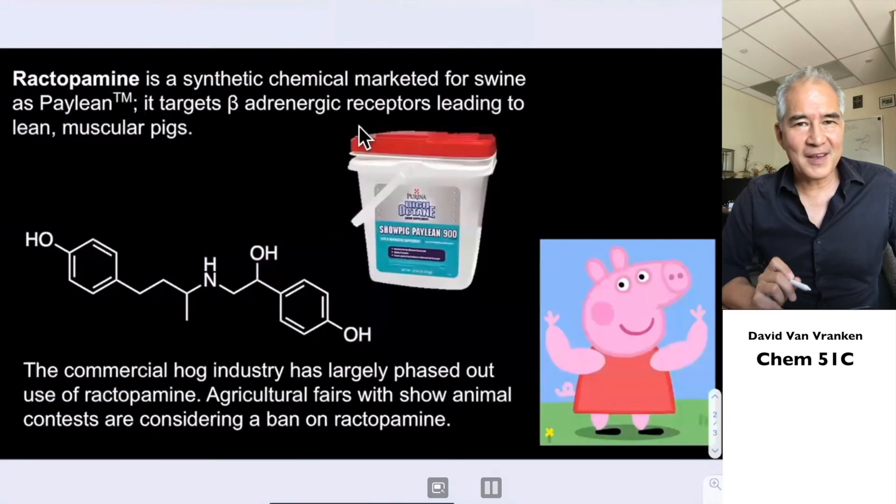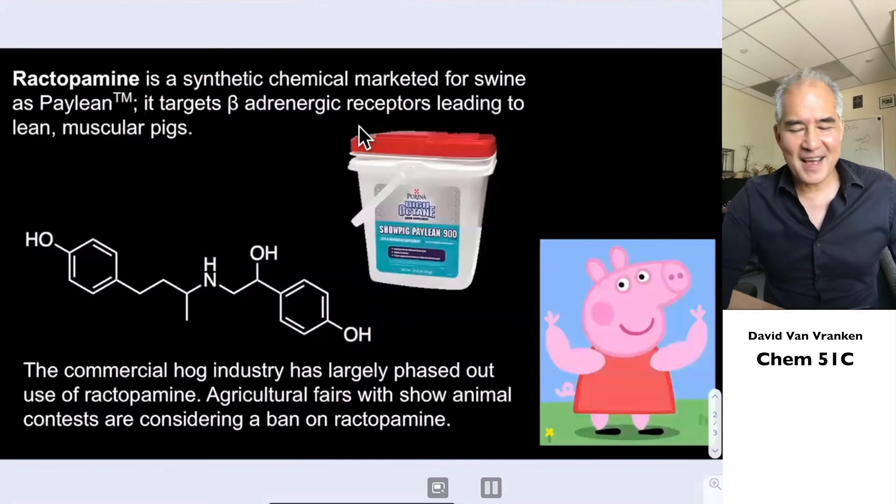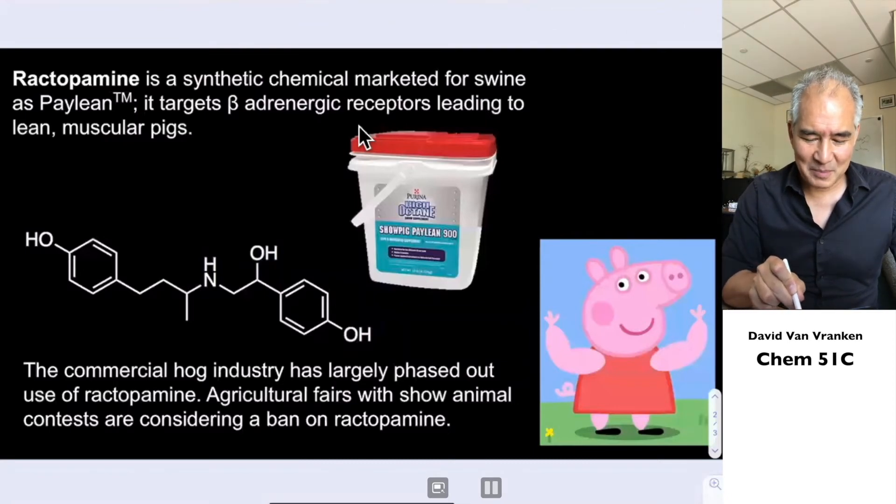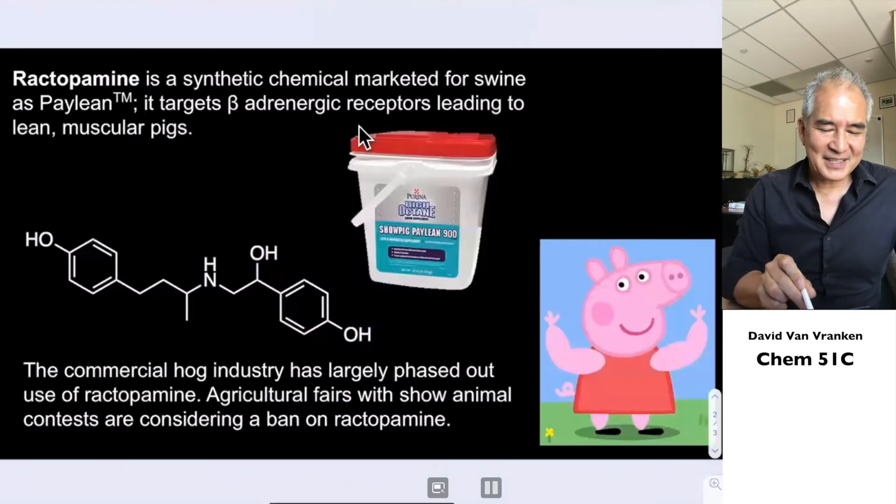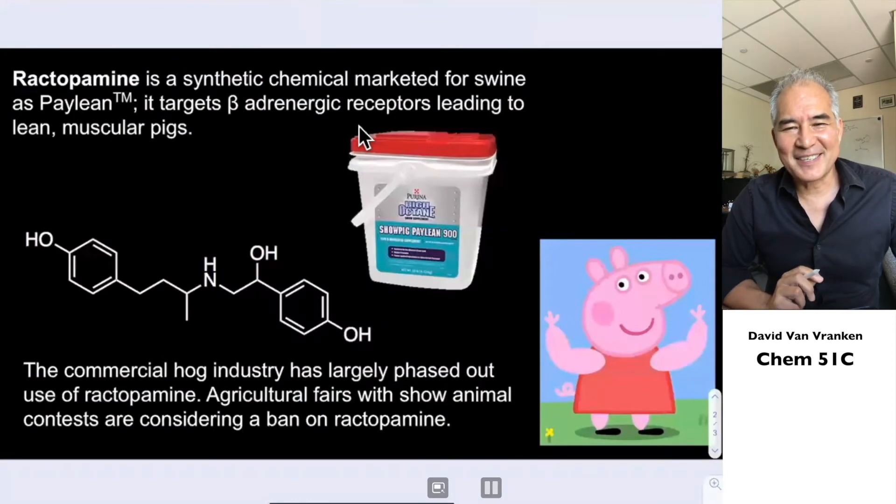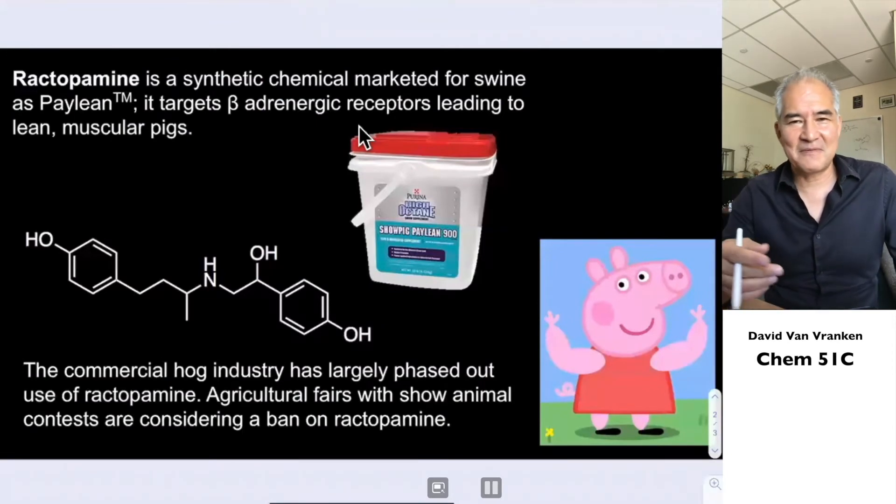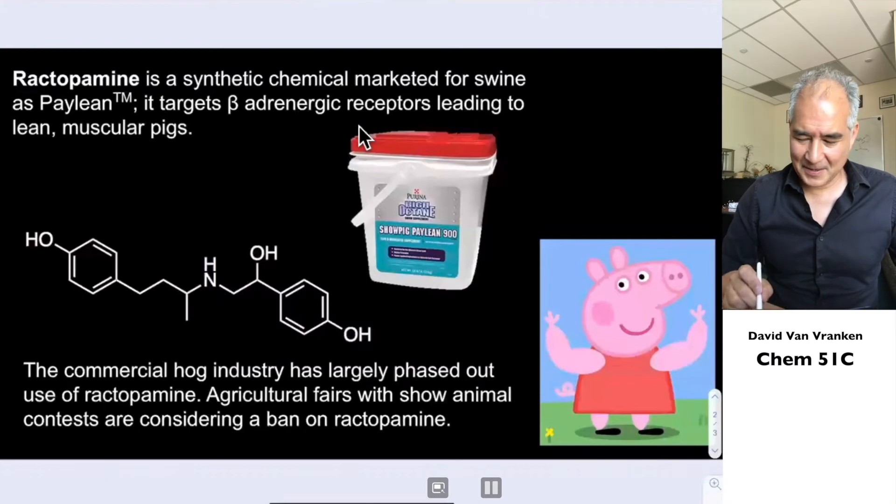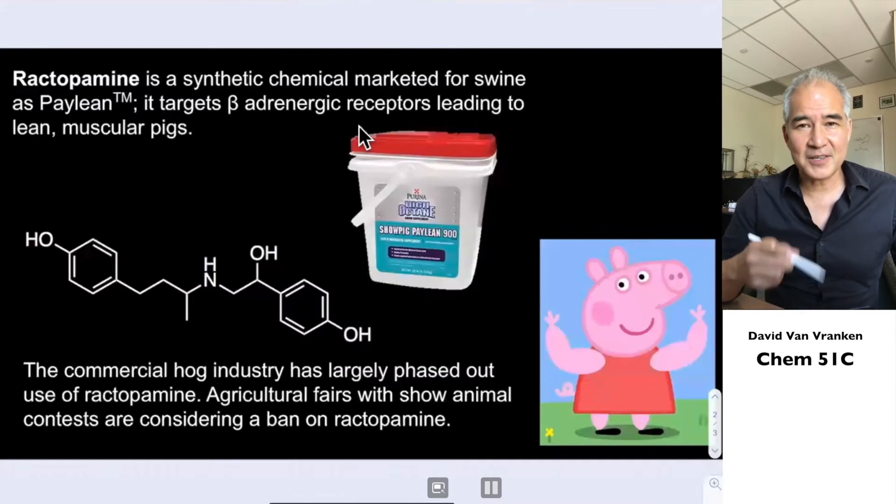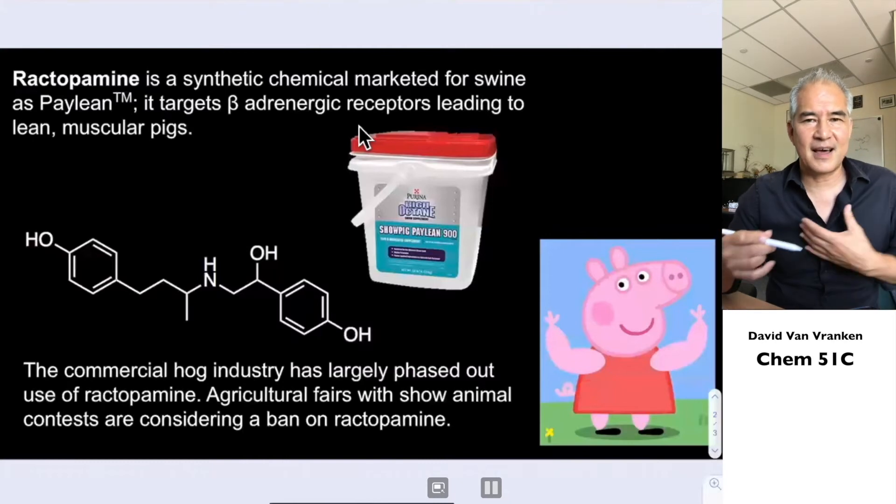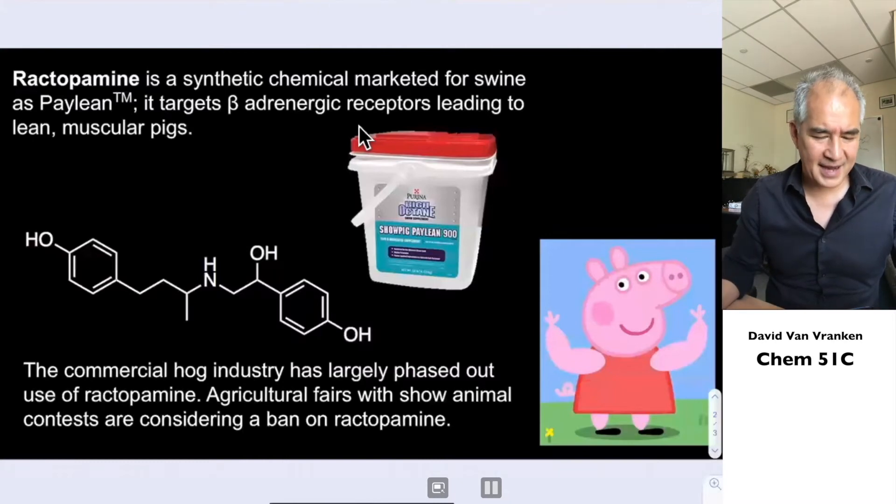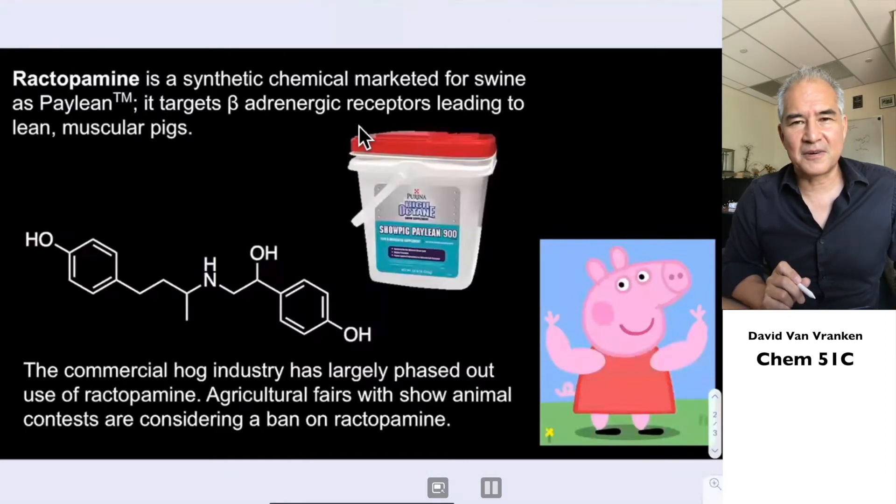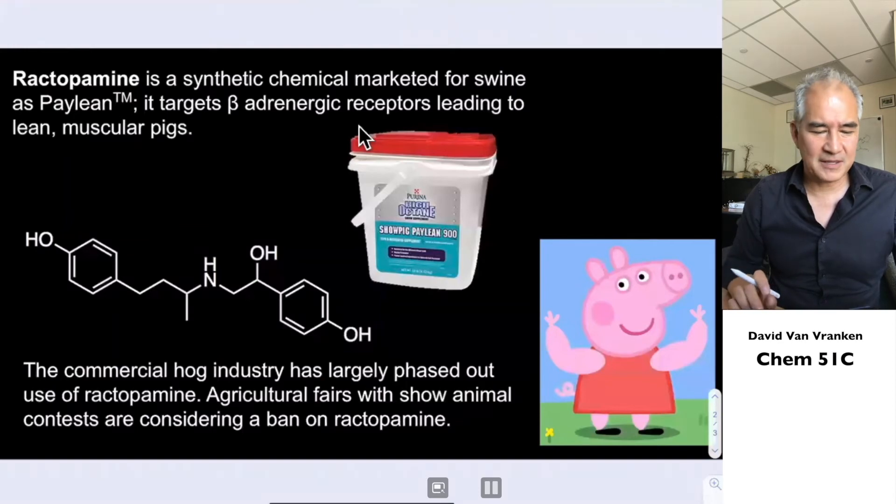How does ractopamine relate to this? It turns out that ractopamine is a small molecule that's synthesized by synthetic organic chemists. This is Purina brand ractopamine, sold as paline 900. It's a synthetic chemical that leads to lean, muscular pigs. You fatten them up and then in some period before you're getting ready to have your show, you start feeding them this stuff and it really buffs them up. They used to use this in the pig and hog industry for the stuff they sell for meat, but they stopped doing this because other countries are concerned about what additives are being added.